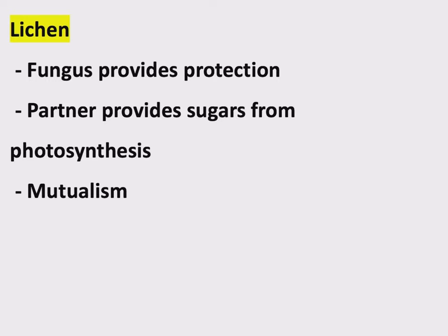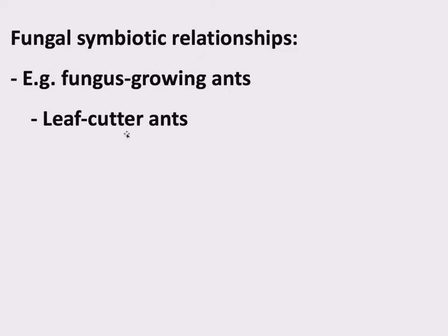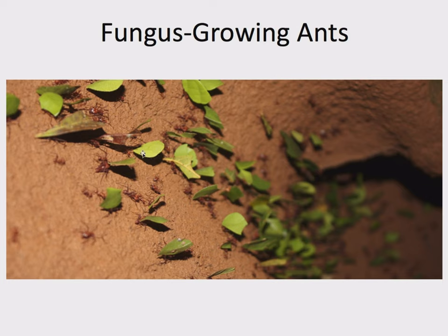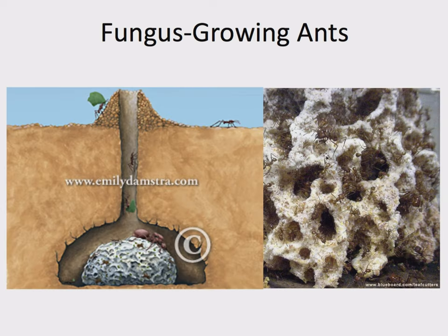Another fungal symbiotic relationship involves leaf cutter ants. Leaf cutter ants earn their name because they cut off pieces of leaves and carry them sometimes long distances back to their home. If you saw a bunch of ants carrying leaves, you would probably guess they're saving them to eat later, or feeding them to their queen or their young. But all of those things would be wrong. What these ants are doing is far more bizarre — they are bringing these leaves down into their colony to feed to a fungus.